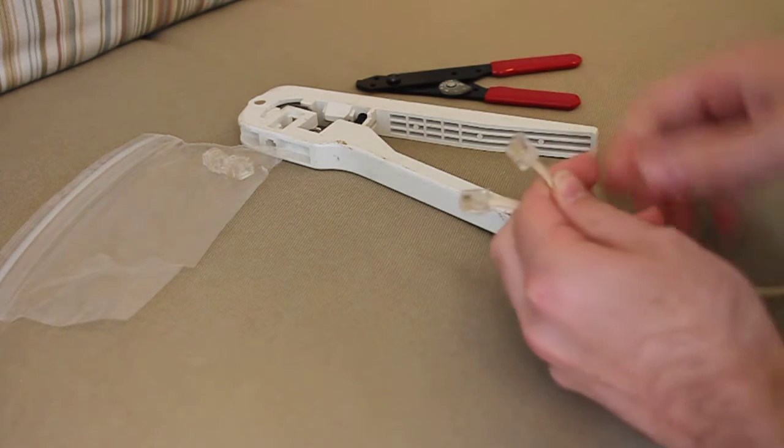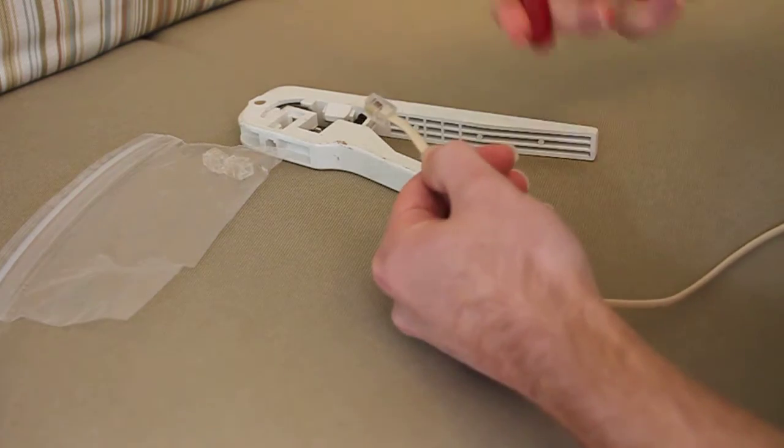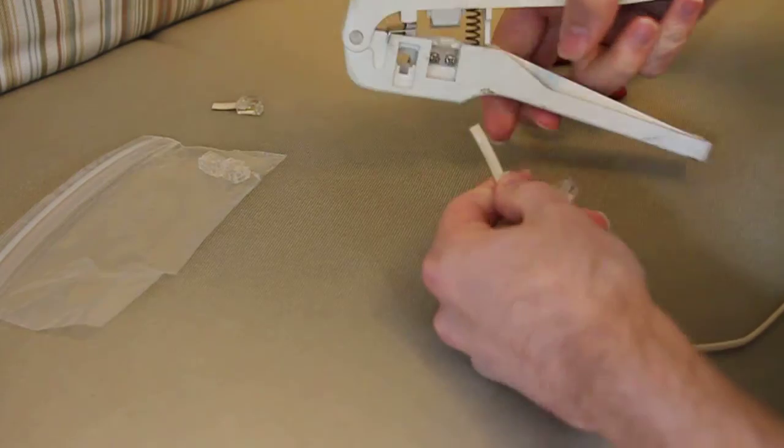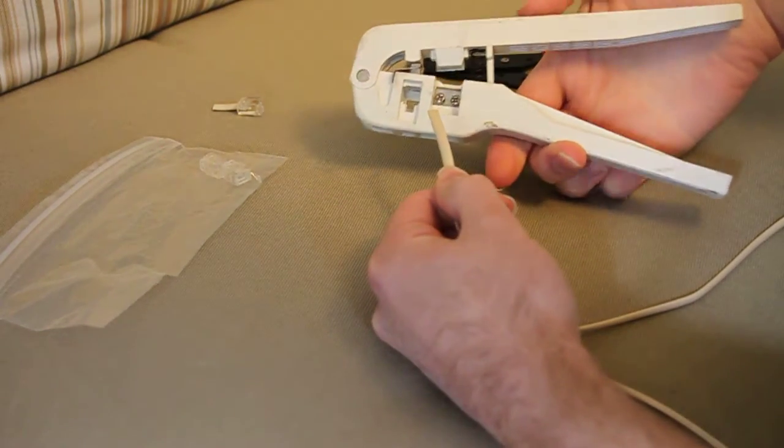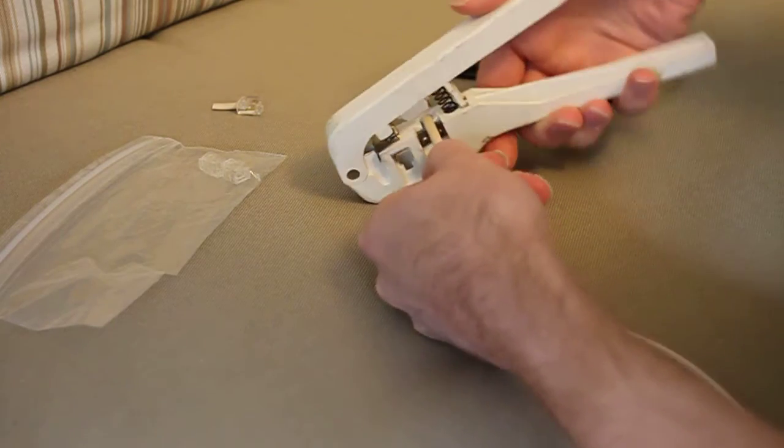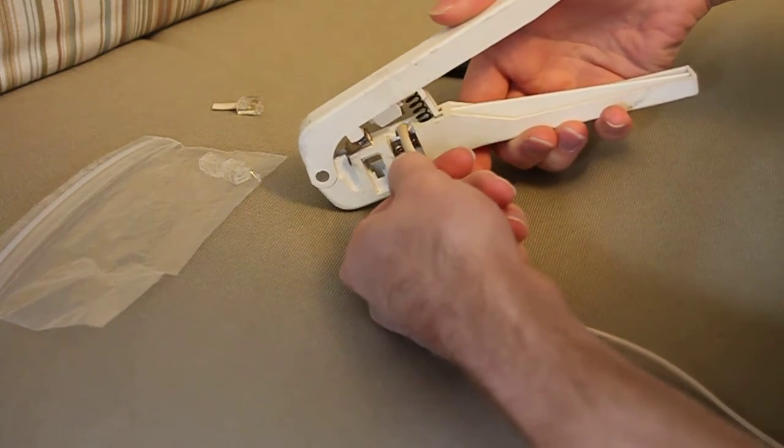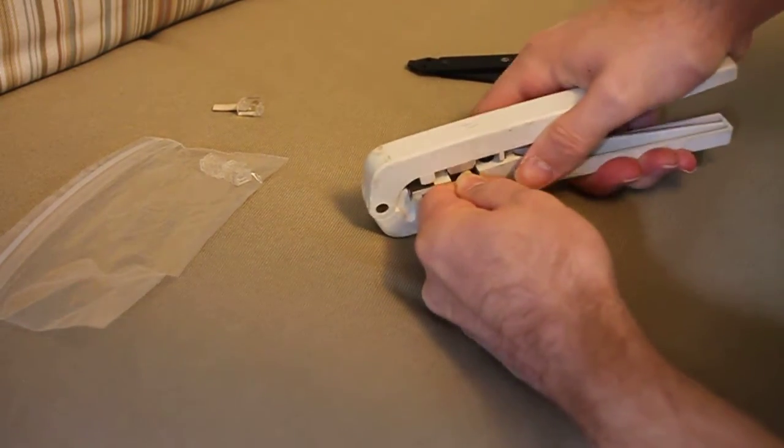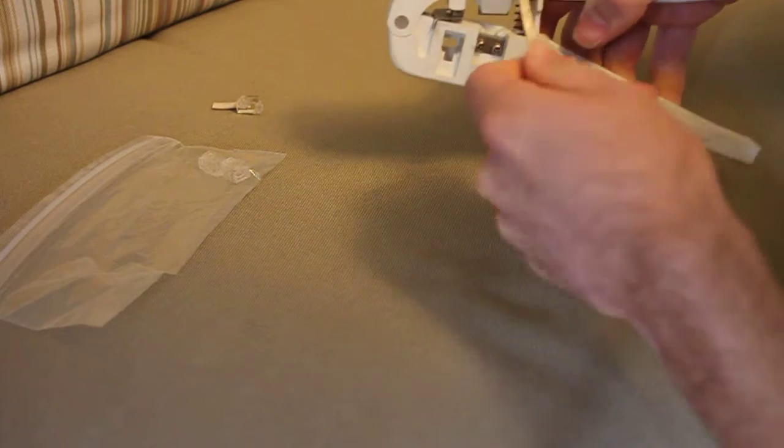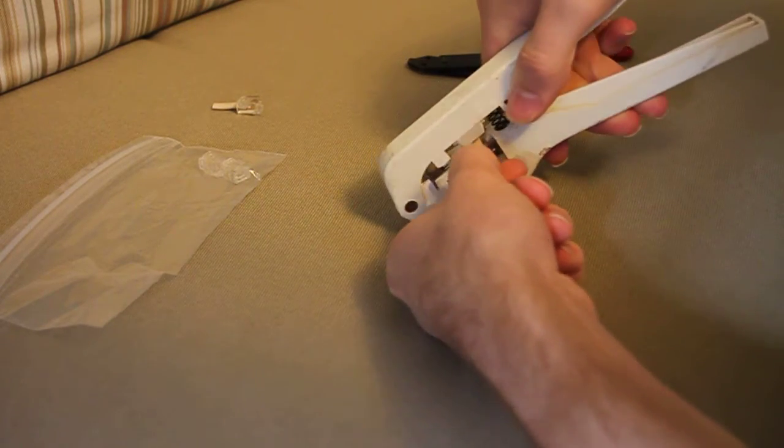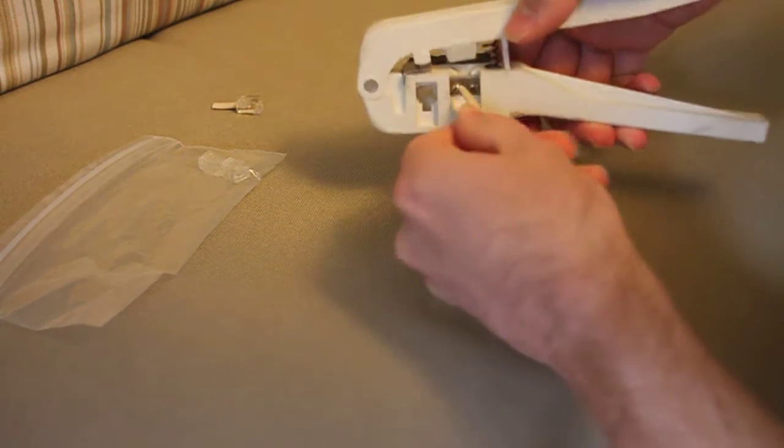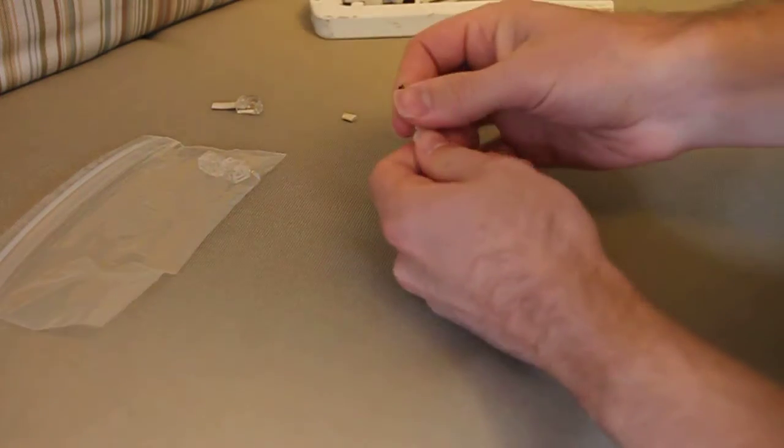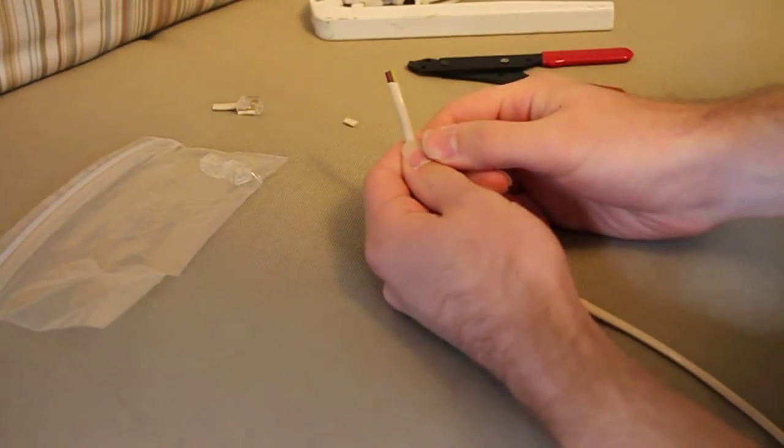First, I'll cut off the broken plug. Then take the end you just cut and put it into the stripping portion of this tool so that it hits the back, and cut it. Put it back in on the other side and cut it again, then pull it off. That will strip the wire to the point it needs to be for the new plug.